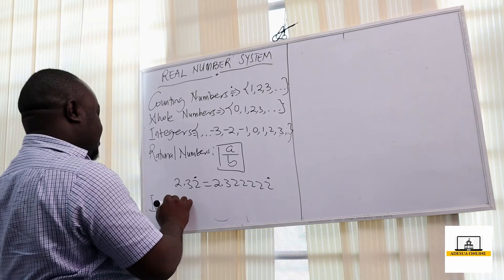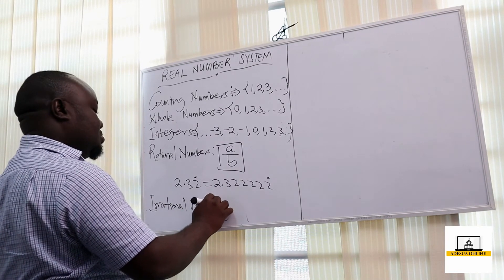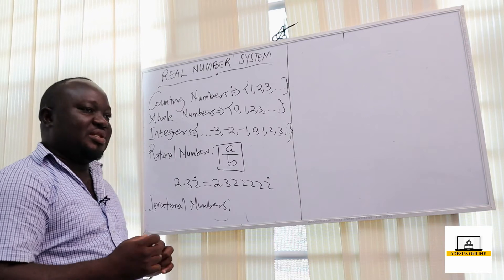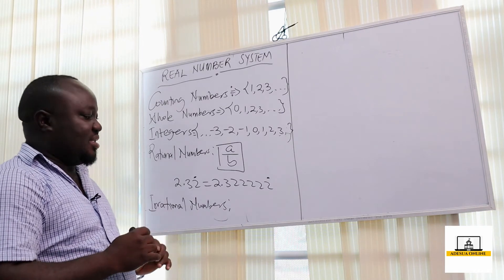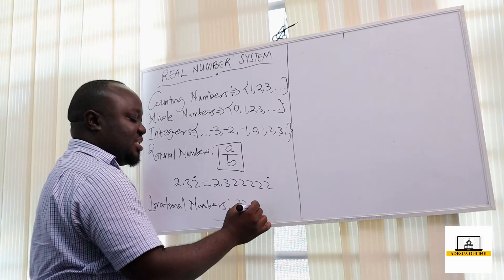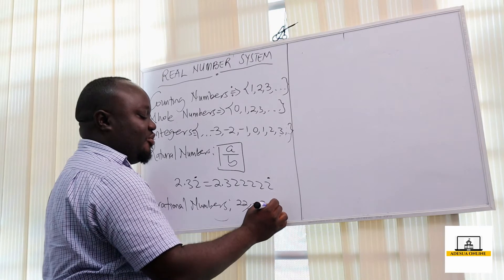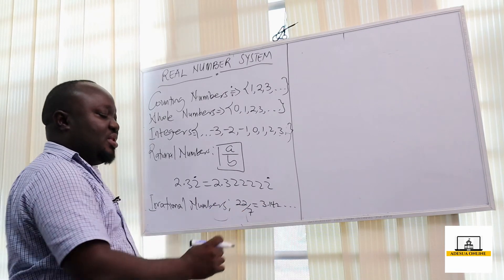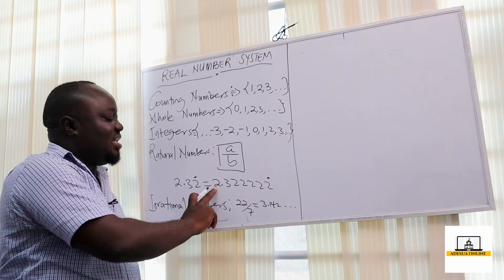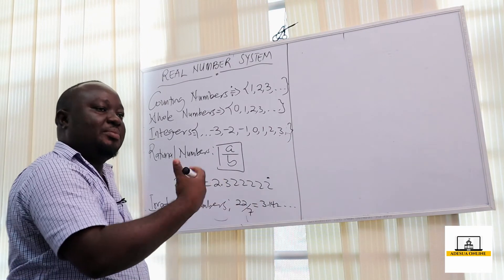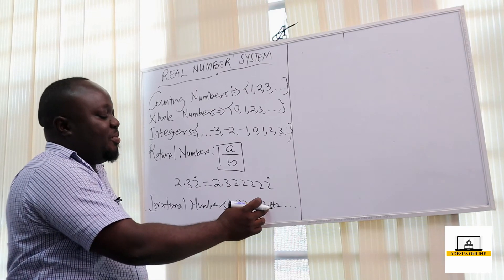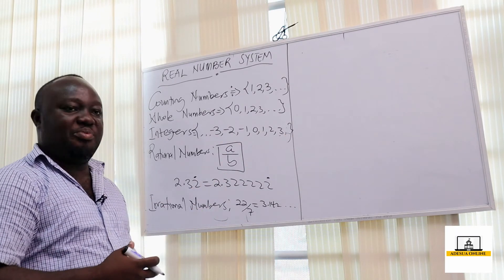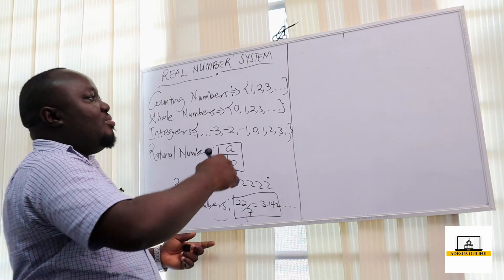For irrational numbers, they cannot be expressed as a fraction because they have no end. For example, 22 over 7 which is equivalent to pi is 3.142... and it runs on, and we can't even predict the next number. Unlike a rational number where the value keeps repeating, pi goes 3.142781 and on and on — the values are not repeated. This is what makes it irrational.